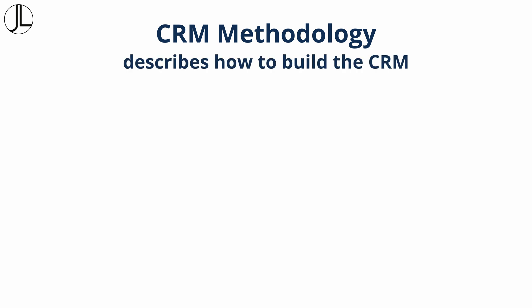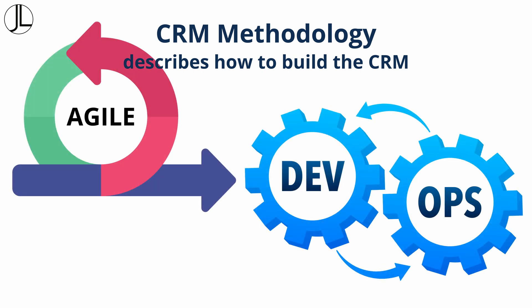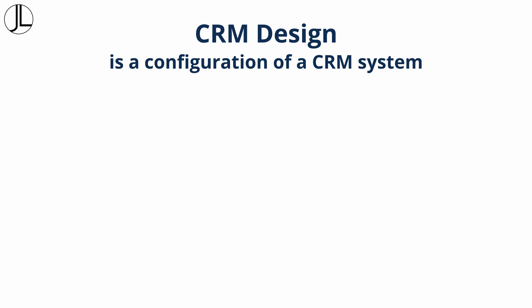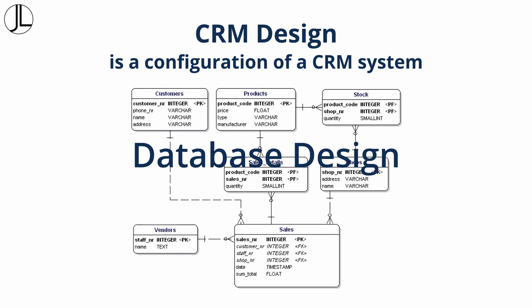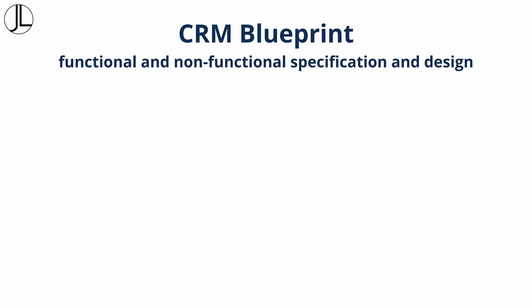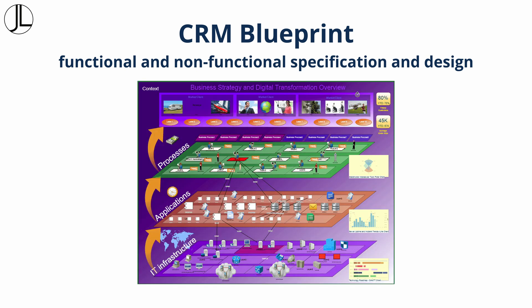A CRM methodology describes how to build a CRM — for example, using an agile and DevOps approach. A design is a configuration of a system. For example, a CRM database design is a physical configuration of a CRM data model. This CRM blueprint is the functional and non-functional specifications and the design, and has the details needed to build the CRM.